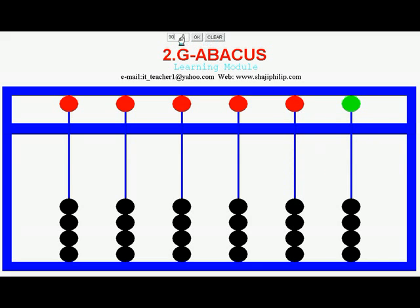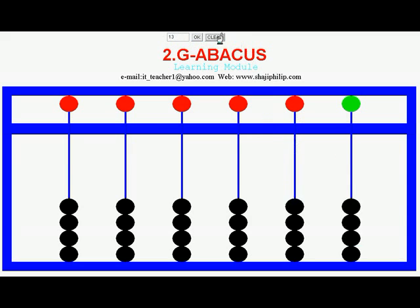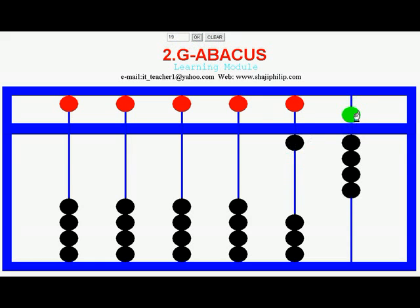If you want to represent 11, then 1 from the 10's and 1 from the 1's should be set. This is the 10's position, this is the 1's position — that is 11. To represent 13: 1 in the 10's, 3 in the 1's — that is 13. To represent 19: 1 in the 10's, and in the 1's position 5, 6, 7, 8, 9 — that is 19.